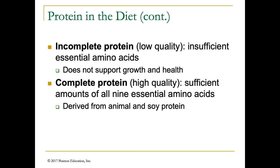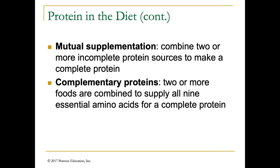An incomplete protein is a protein that doesn't have all of the essential amino acids you need and therefore does not support growth and health. In contrast, a complete protein or high quality protein has sufficient amounts of all nine essential amino acids, and these tend to be derived from animal or soy protein. Proteins can be made complete by doing something called mutual supplementation, where you take two or more incomplete protein sources, combine them, and eat them together to make a complete protein.